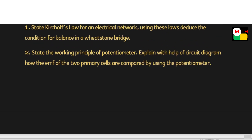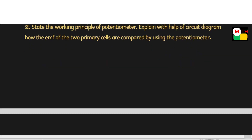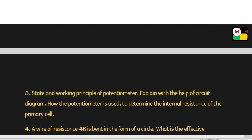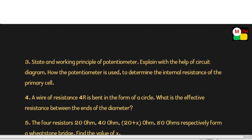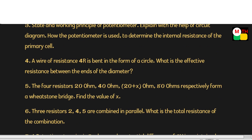This is the question of 2 units. So you need to talk about 3 units. This is the fourth unit. A wire of resistance 4R is bent in the form of a circle. What is the effective resistance between the ends of the diameter?